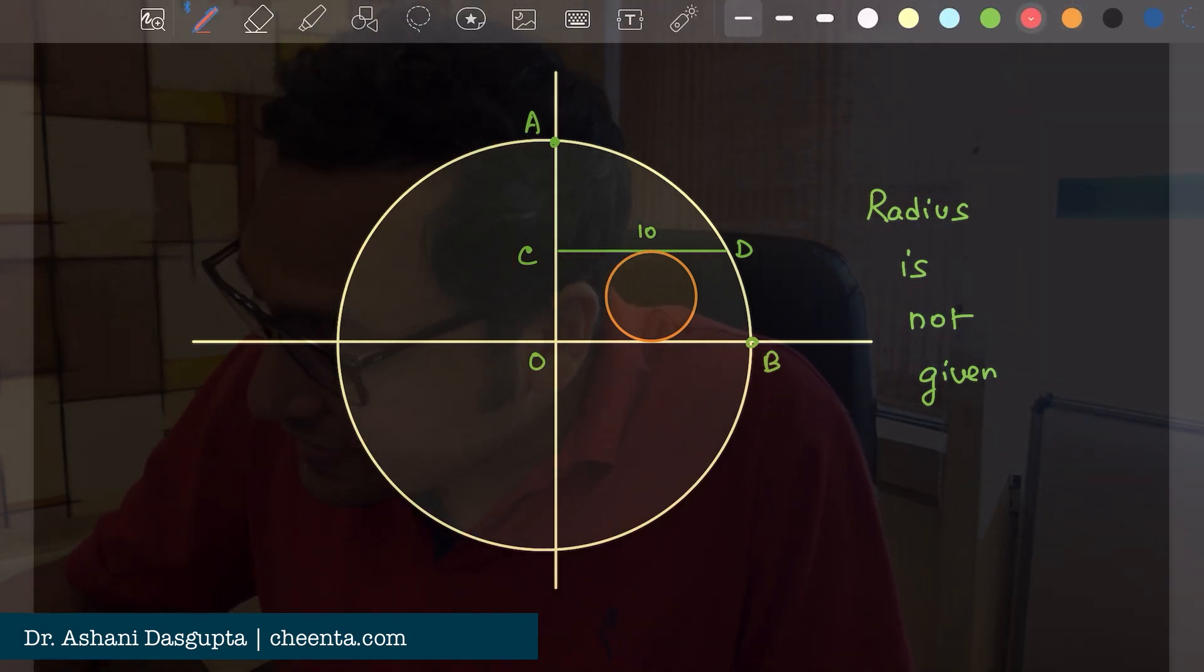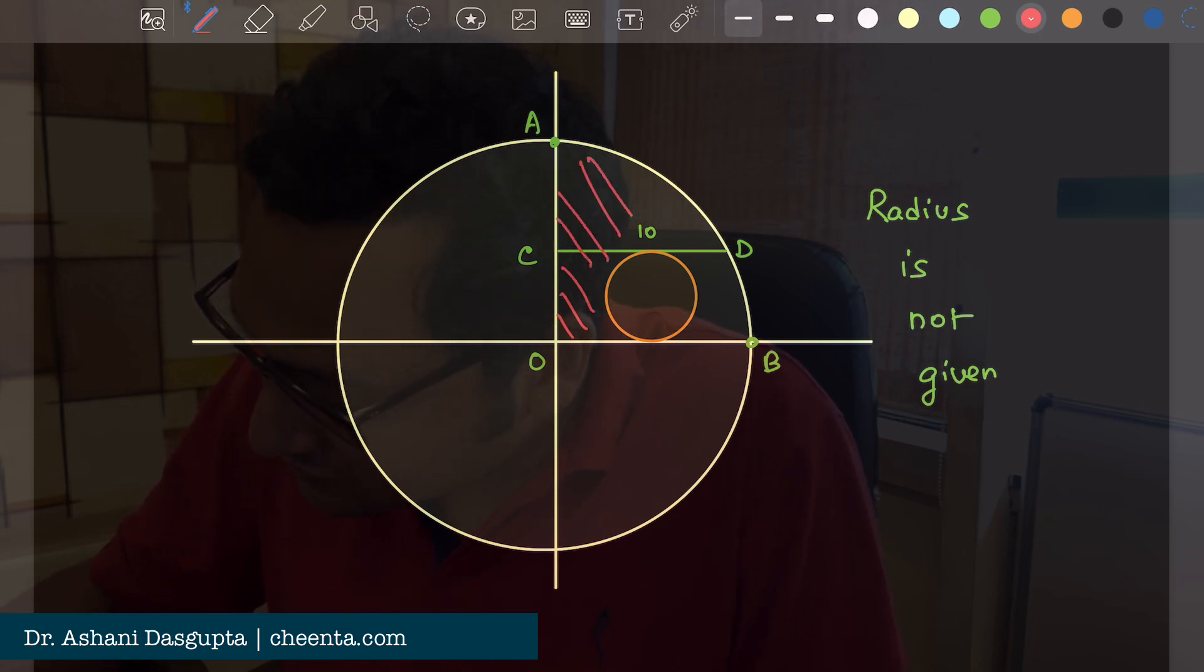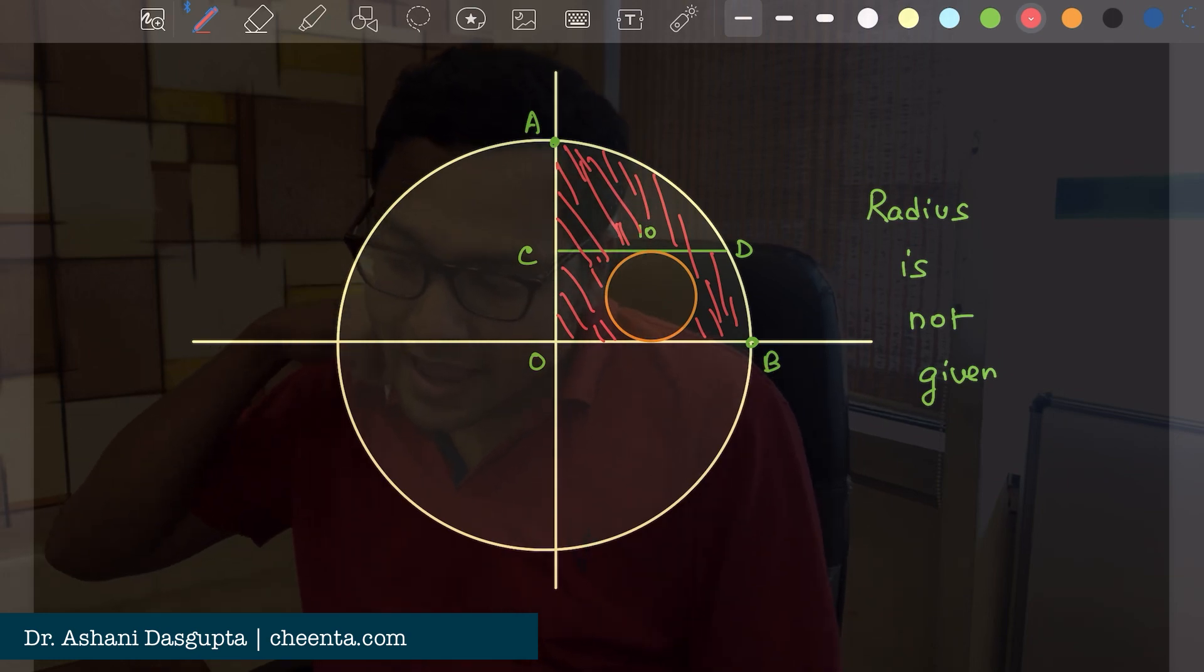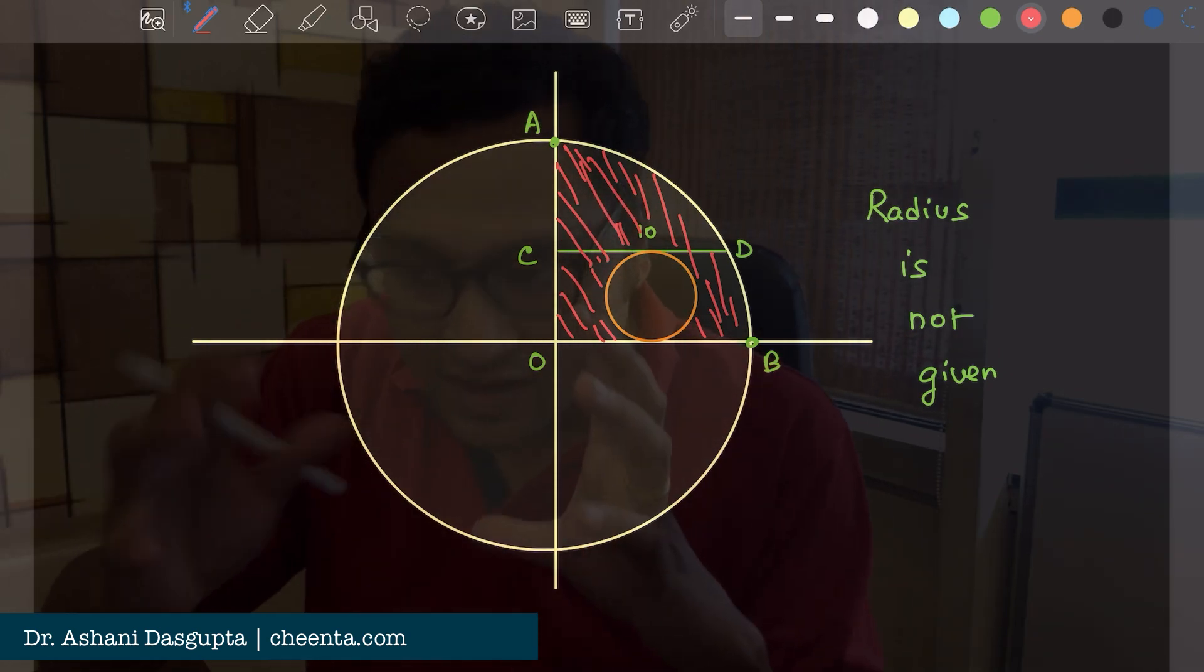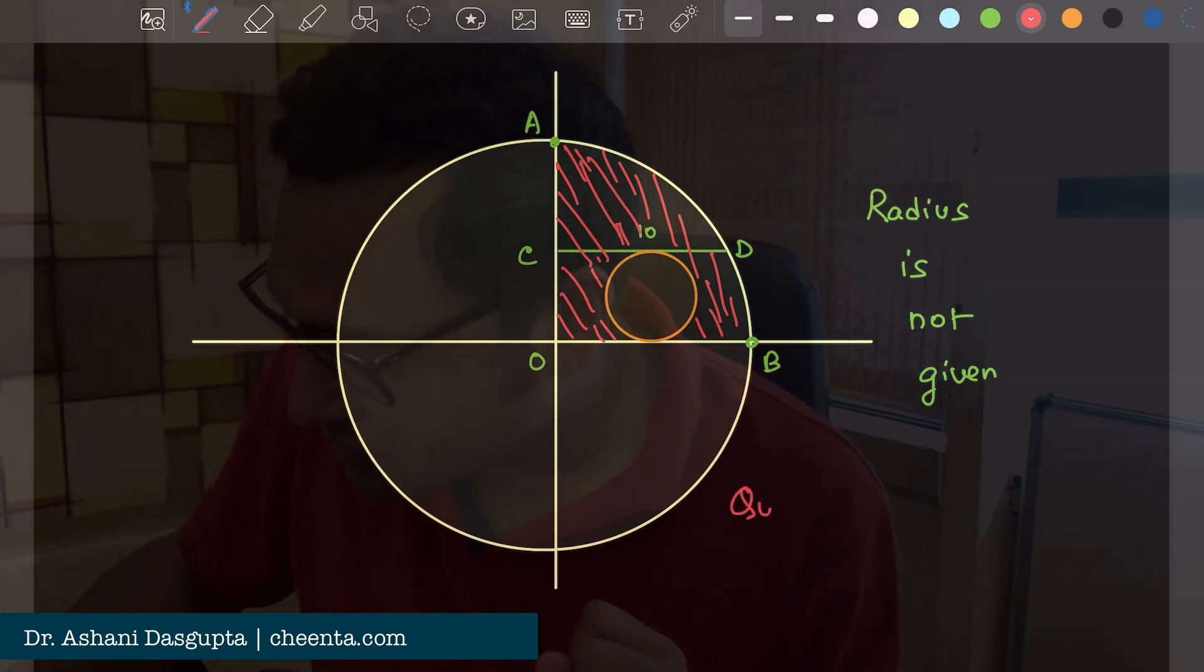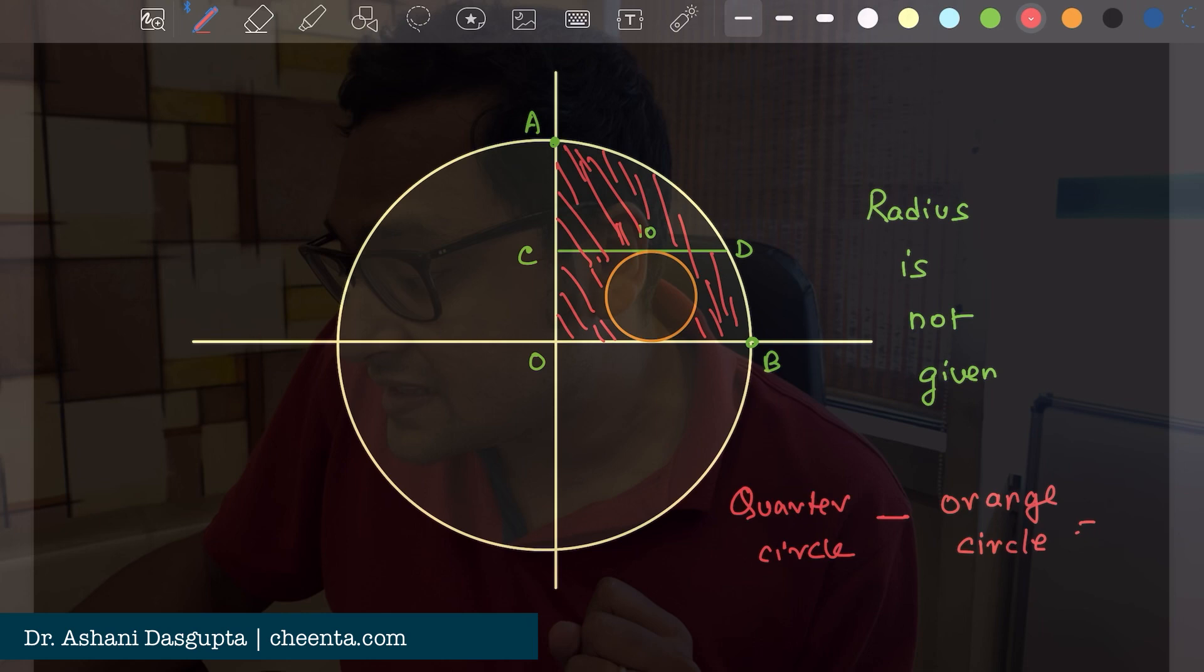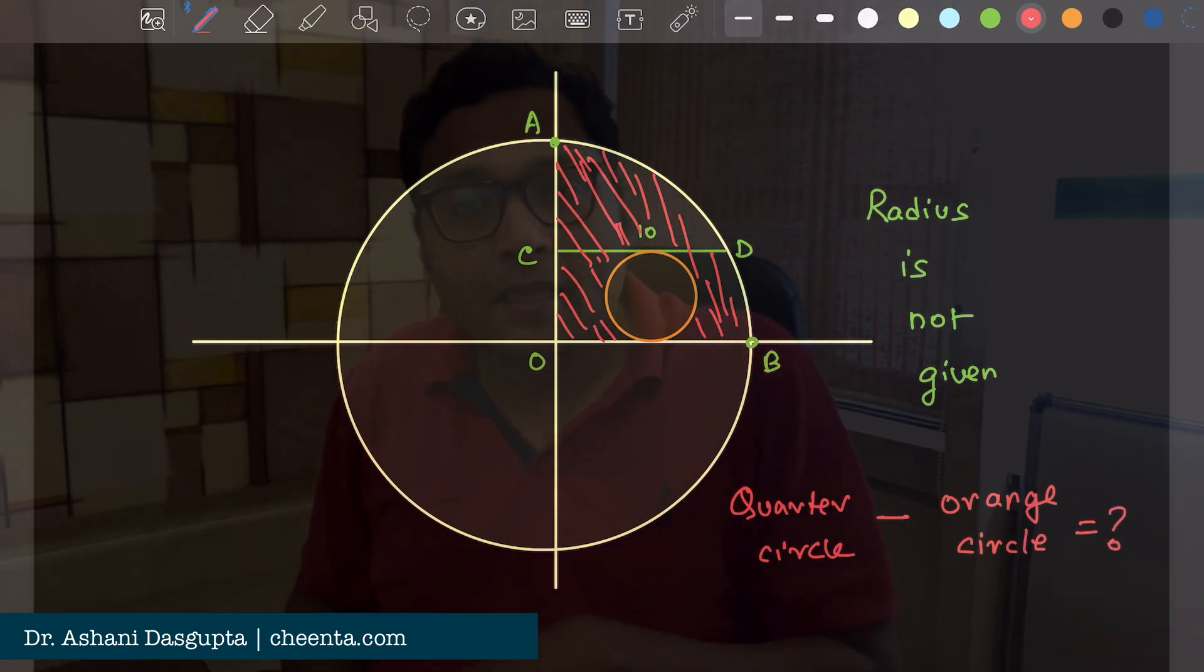We want to find out the area of the shaded region. It's the quarter circle minus the orange circle. You want to find out this area.